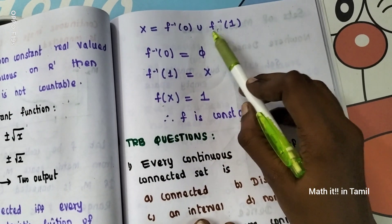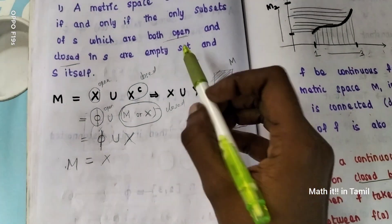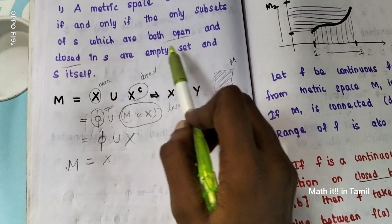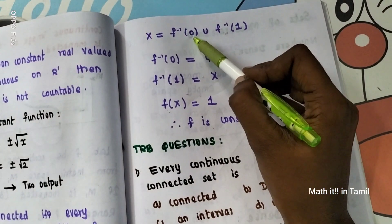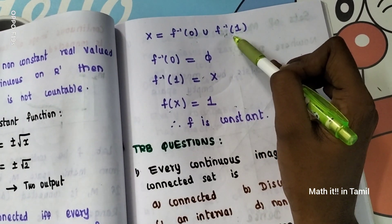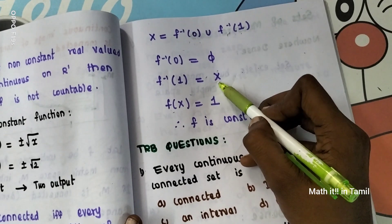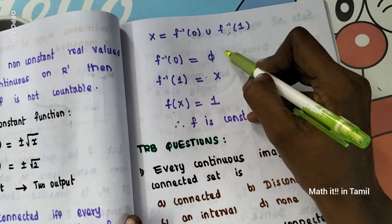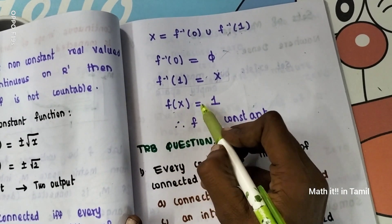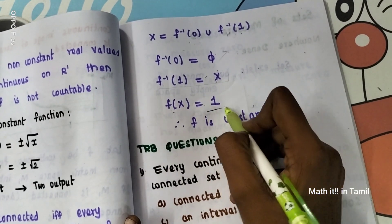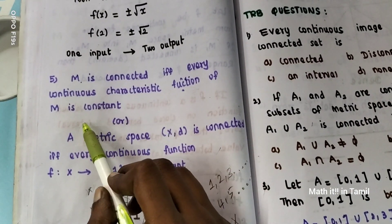So X equals f-inverse of 0 union f-inverse of 1. We already have the statement: the only subsets which are both open and closed are the empty set and the total set. So if f-inverse of 0 equals the total set X, then f(x) equals 0 for all x — which is constant. Similarly, if f-inverse of 1 equals X, then f(x) equals 1 — which is constant. So the characteristic function of M is constant, confirming the statement.